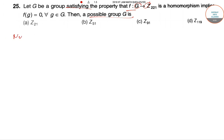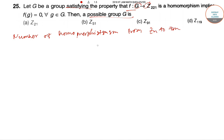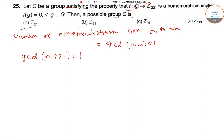The number of homomorphisms from Z_n to Z_m is determined by gcd(n, m). The condition requires gcd(n, m) = 1. Here m = 221, so gcd(n, 221) must equal 1. We check each option, noting that 221 factors as 13 × 17.